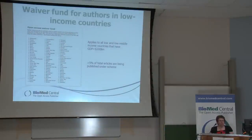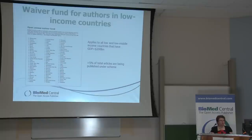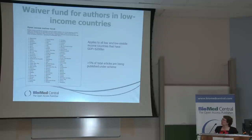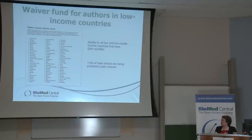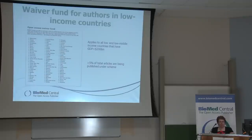Having said that, the big publishers — Biomed Central, PLOS, and various others — do give waivers to those who can't afford to pay. Biomed Central gives an automatic waiver to all low- and middle-income countries with a GDP of less than $200 billion, which means very nearly all countries in Africa are covered, meaning authors from those countries don't have to pay an article processing charge. More than 5% of our articles are published under that scheme, and African authors are becoming a bigger proportion of what we publish.